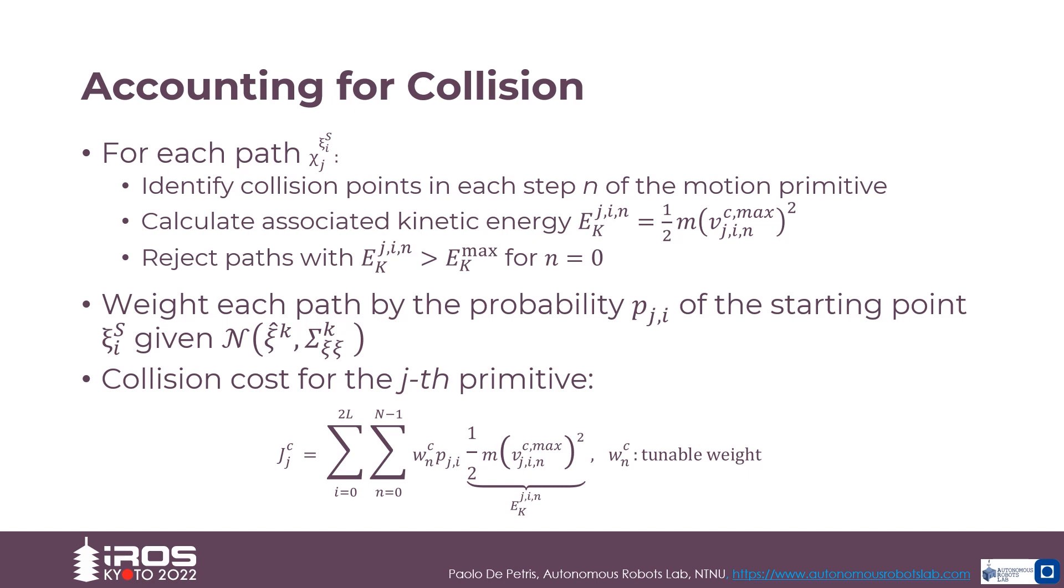For every collision-inclusive path, its risk should be weighted according to the probability p of the mean or uncertainty-aware starting point C of S.